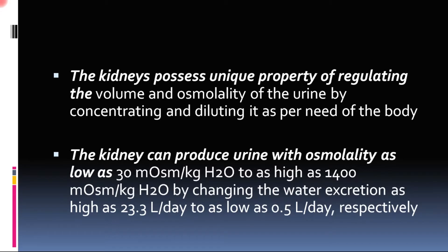The kidney possesses a unique property — it has the ability to regulate the volume and osmolarity of the urine by concentrating and diluting the urine as per the need of the body. By virtue of this property, the kidney is able to regulate the body fluid volume itself, by increasing or decreasing the volume of urine that is excreted, and along with that it regulates the osmolarity of the urine.